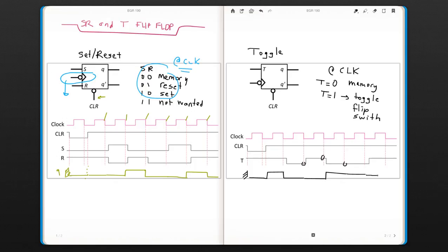Still memory state, and then it's going to change its output here. So you have here toggle, toggle, memory, toggle, memory, memory, and toggle.